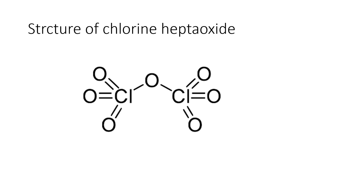Now, structure of Chlorine Heptoxide, Cl2O7. Here, a centrally located oxygen is present. To this oxygen, two Chlorine atoms are attached. To each Chlorine atom, three oxygen atoms are attached with double bond. The hybridization of Chlorine in Cl2O7 is sp3. Cl2O7 can be prepared by dehydration of perchloric acid in the presence of phosphorus pentoxide or oleum, or by low temperature electrolysis of concentrated perchloric acid on a platinum anode.